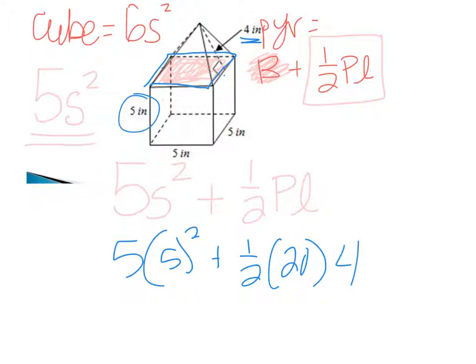So 5² is 25 times 5 is 125, plus half of 20 - that's 10 - 10 times 4 is 40. So this composite figure would have a total surface area of 165 square inches.